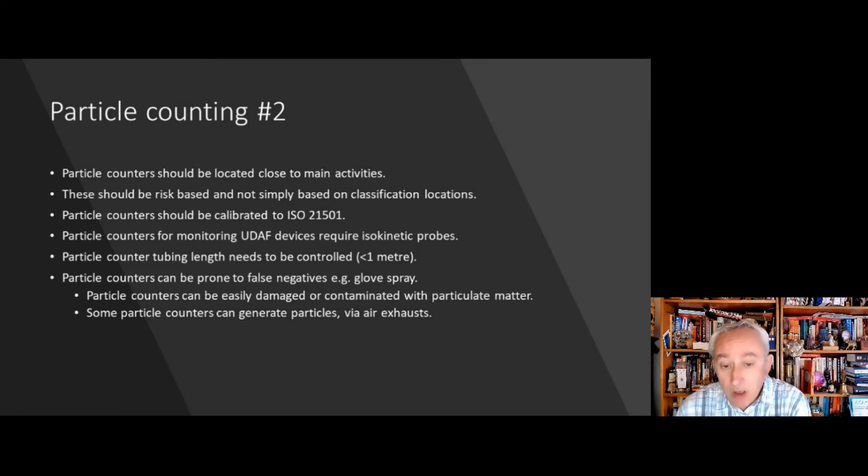Where we're monitoring particles within unidirectional airflow devices, these counters should be fitted with isokinetic probes. These are the stainless steel contraptions that go on the end of the particle counter tubing and help to straighten the air and make sure the air is going through the counter with a uniform velocity. These probes should always be orientated in the direction of the airflow.